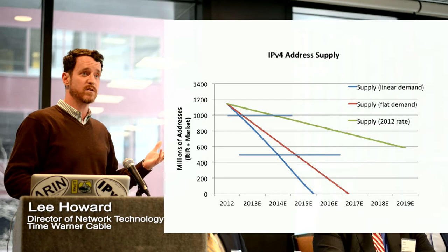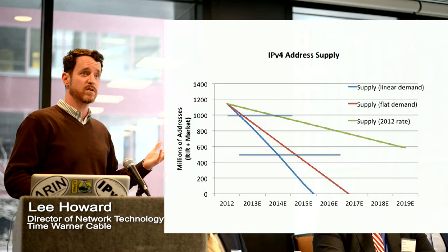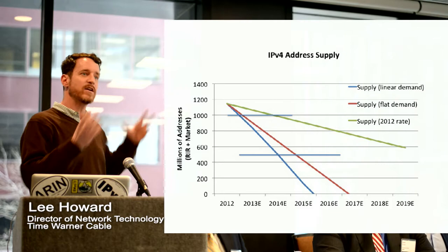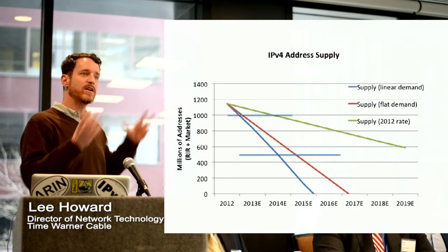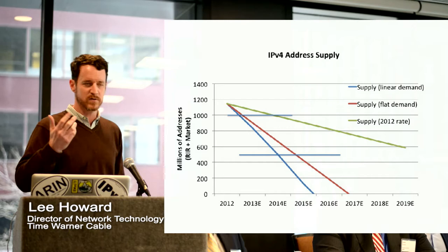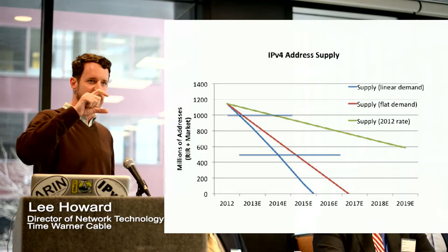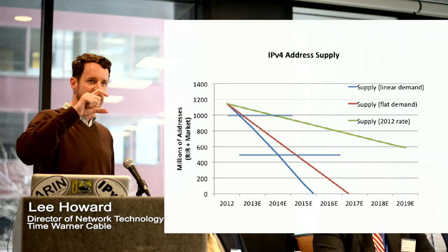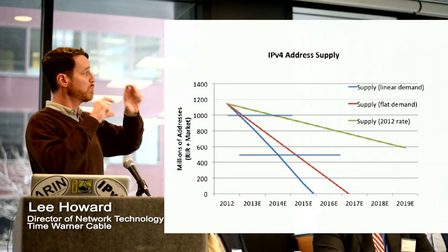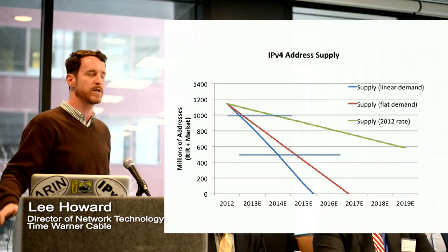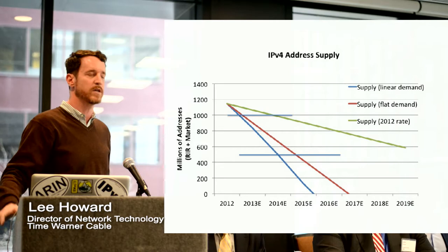Another half a billion belong to end-user legacy organizations that have had them a long time, and their rate of utilization looks to be less than 50%. Adding that together — the half billion unrouted address space, the under-utilized half billion, plus the little bit the RIRs have left — I get something approaching 1.2 billion addresses available to be used on the internet that aren't really currently being used. That's significant. A billion of anything is a lot.